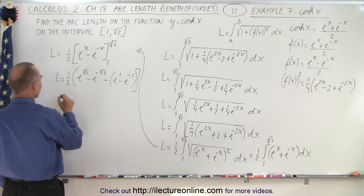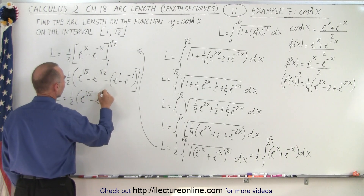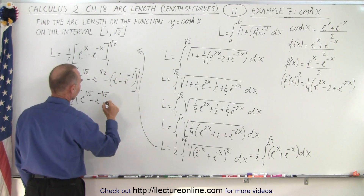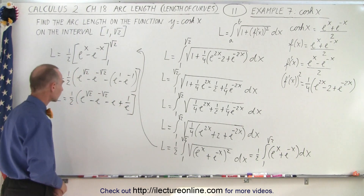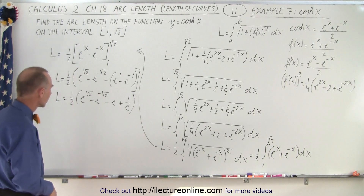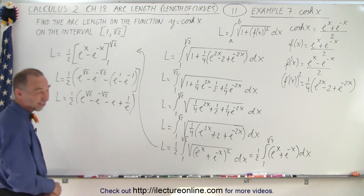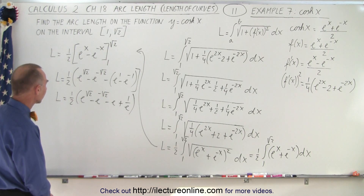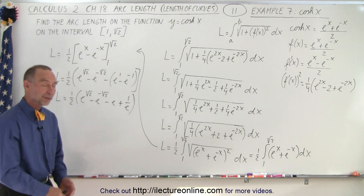We'll simplify just a little bit. So L is equal to 1 half times e to the square root of 2 minus e to the minus square root of 2, minus e to the 1, and minus times minus gives us plus 1 over e. I think that's about as simple as we can get it — I could get a calculator out and compute the length, but I believe that's the simplest form. And so that would be the arc length of that hyperbolic function.